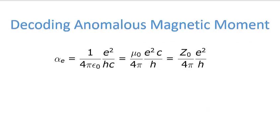We now have three terms that evaluate to the anomalous magnetic moment. One is in terms of permittivity, one is in terms of permeability of free space, and one is in terms of the impedance of free space. So these three terms — permittivity, permeability, and impedance — are all associated with free space.